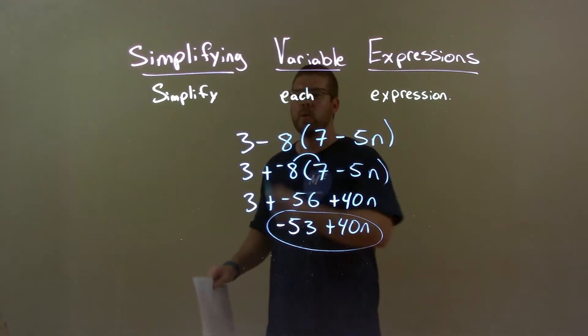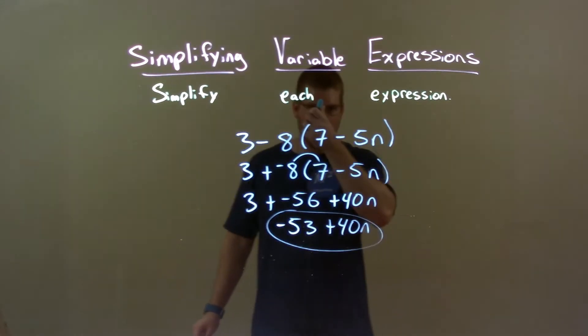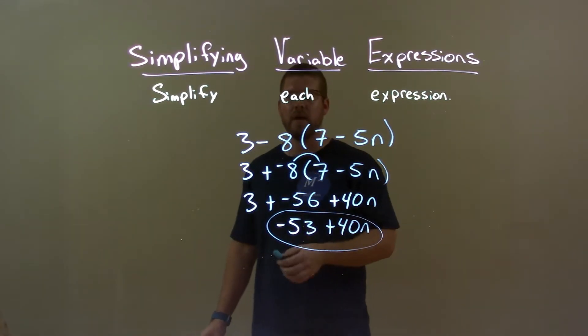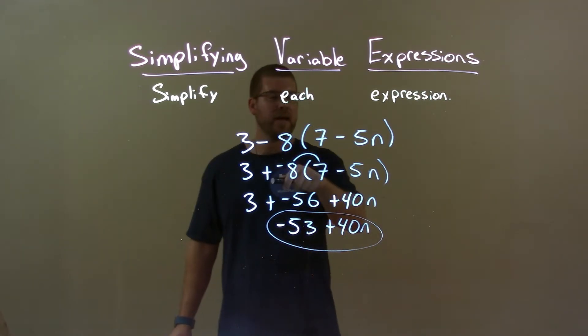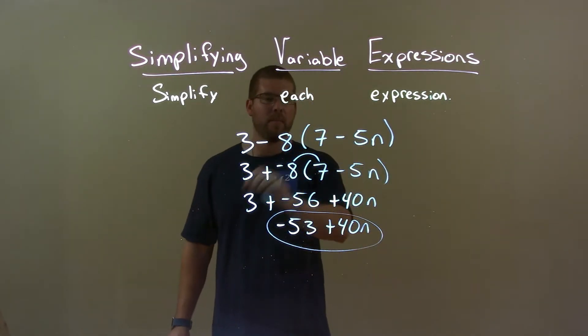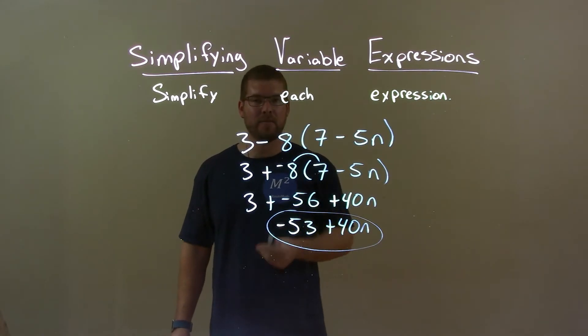Quick recap. We're given 3 minus 8 times 7 minus 5n and we have to simplify this expression. Well, I made the subtracting an 8 plus a negative. Then I distributed the negative 8 across into my parenthesis. Then I combined my like terms and got my final answer, negative 53 plus 40n.